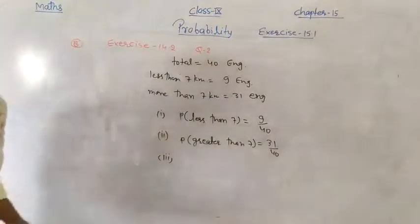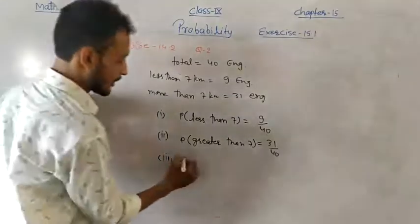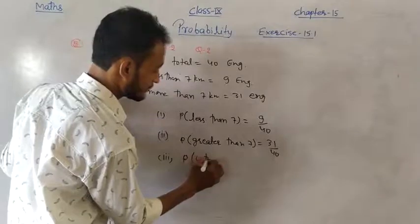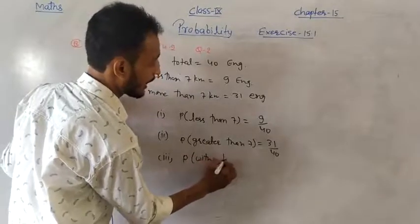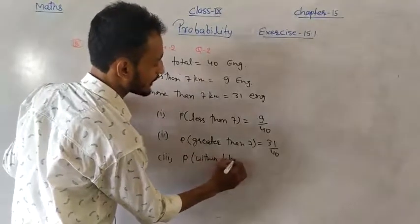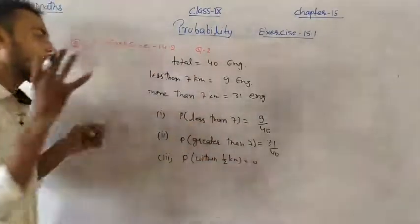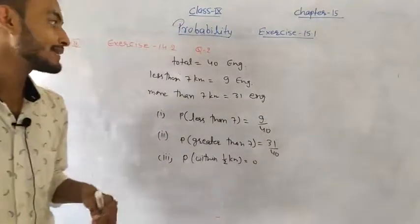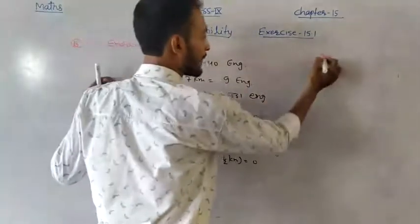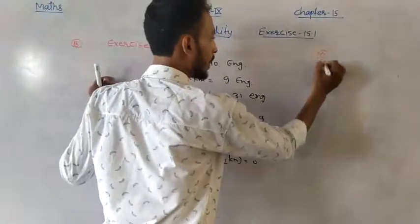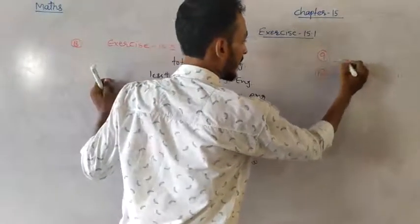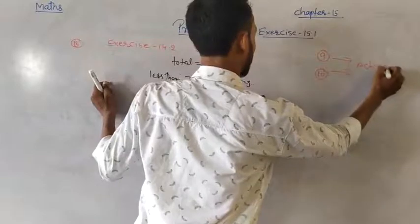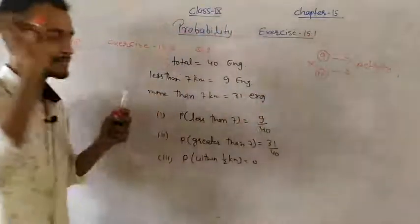Third part: probability of living within half km. Since no engineer lives within half km, the probability = 0. Questions 9 and 10 are activity-based questions, so we do not need to solve them — they are not asked in exams.